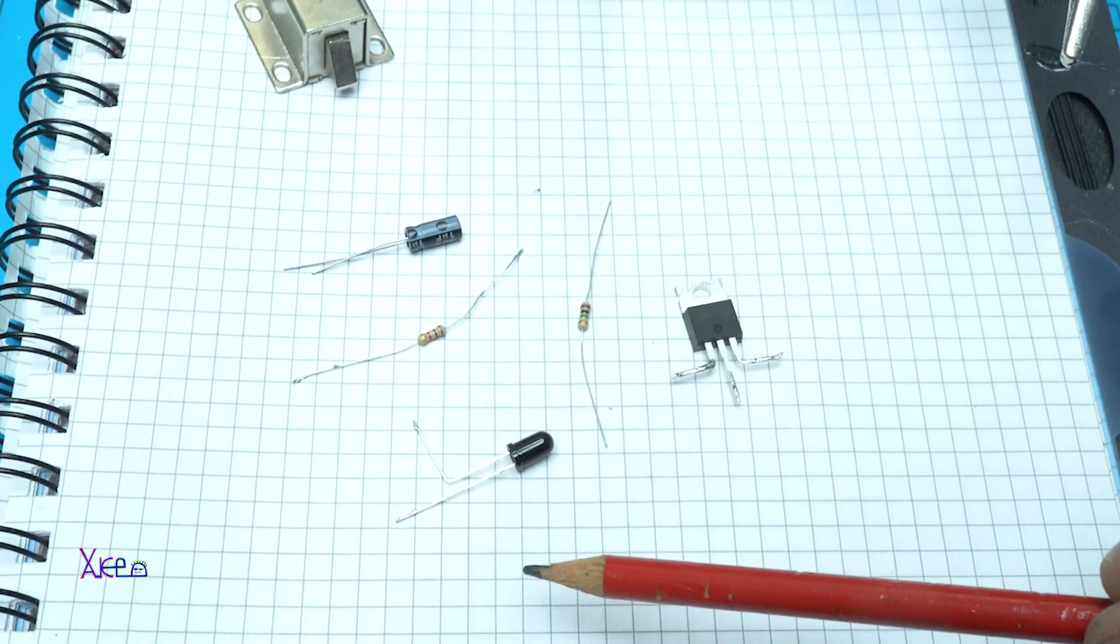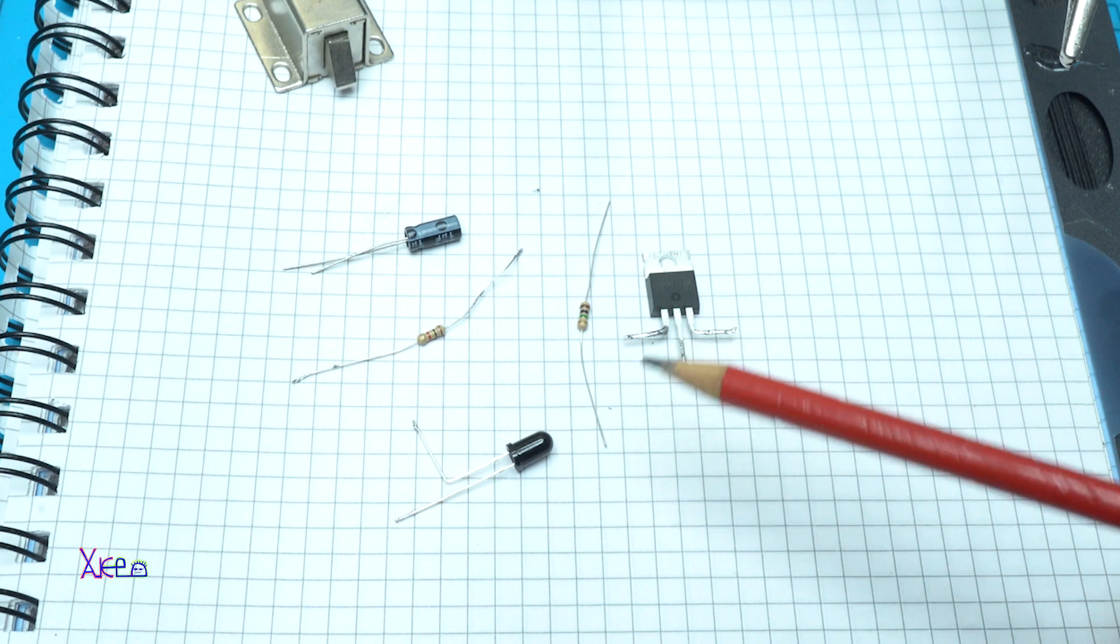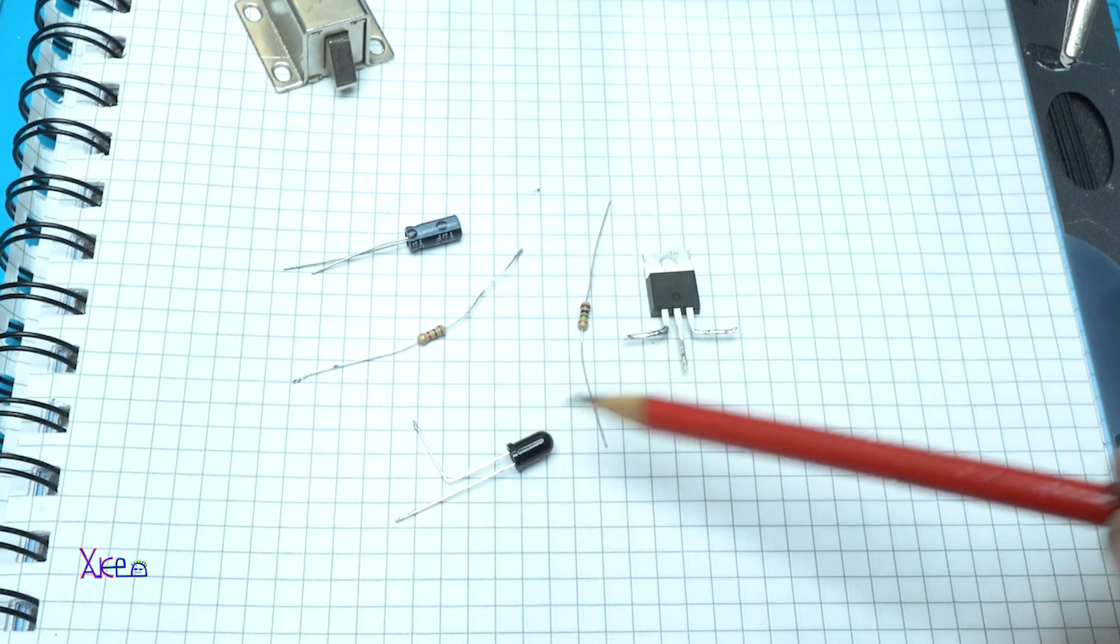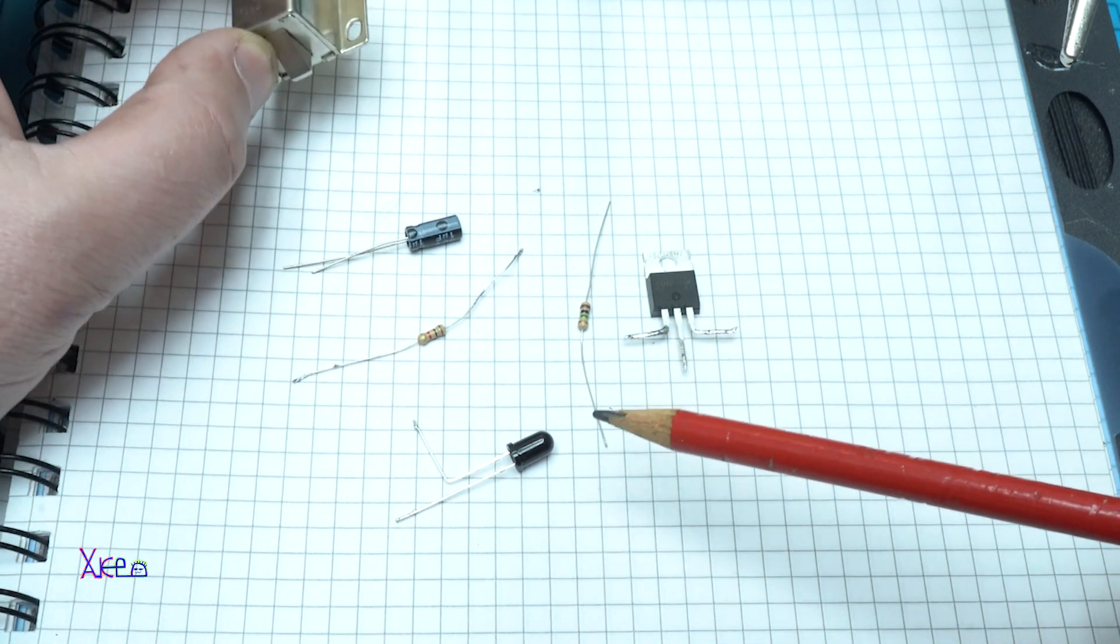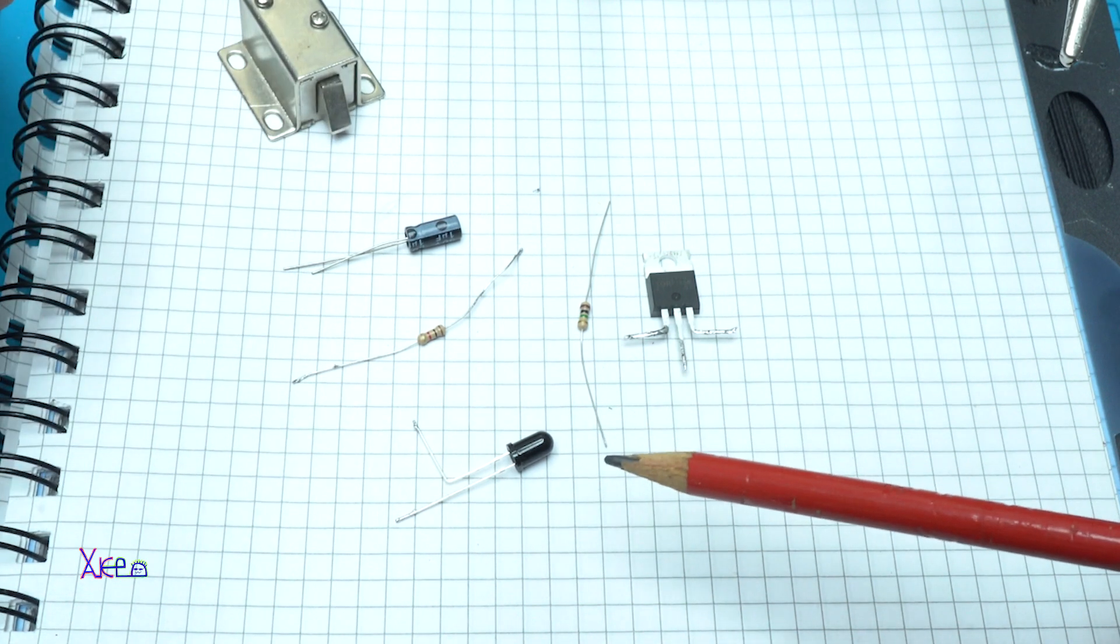Using five electronic components and this powerful MOSFET transistor, in today's video I'm going to show you how you can make a remote control with MOSFET. Let's start.